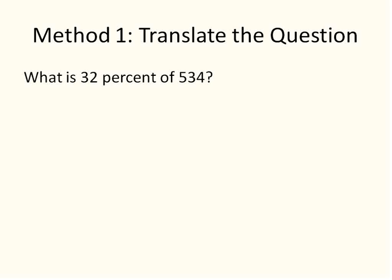Method number one is to translate the question. Here's a sample question: What is 32% of 534? When I get a question like this, I'm going to identify each part of the sentence. What is 32% of 534? I'm going to translate that into being a different operation or number. What? That's our unknown, so I'm going to label that as our variable x. Is will be our equal sign. 32% I'm going to write as a decimal, 0.32. Of means multiplication and our number 534 remains the same.